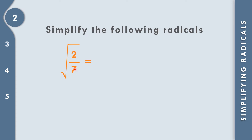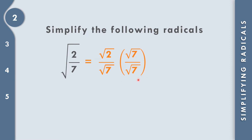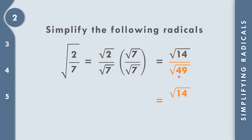For number 2, square root of 2 over 7. We need to rewrite this as square root of 2 over square root of 7. Then multiply the numerator and denominator by the lowest power, which is square root of 7. Square root of 2 times square root of 7 gives square root of 14. Square root of 7 times square root of 7 gives square root of 49, which equals 7. So the final answer is square root of 14 over 7.